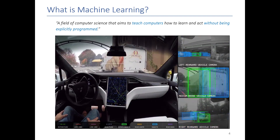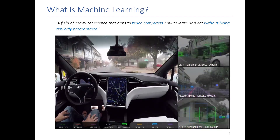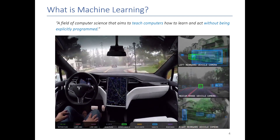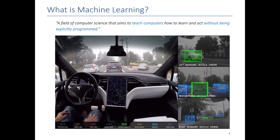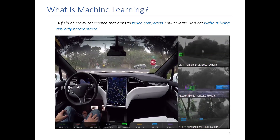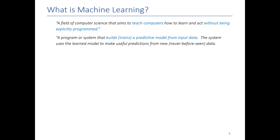For example, if I'm Tesla and I want to teach a car to drive, I want the computer to learn the rules of driving without having to program every rule explicitly — at a red light stop, at a yellow light slow down, at a green light go fast — without teaching it all these rules, because there are too many rules for me to explicitly state. You can also think of machine learning as a system or a way of building a model from data.